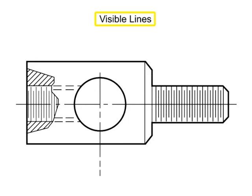Visible lines, sometimes called object lines, represent the edges or lines on an object. They are solid lines with a thick weight.